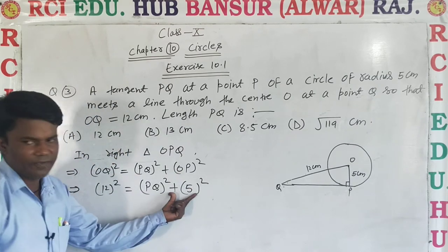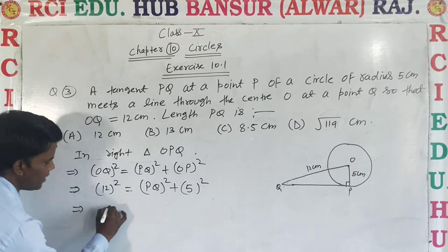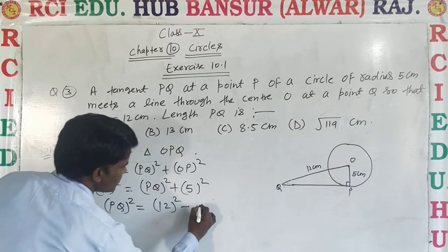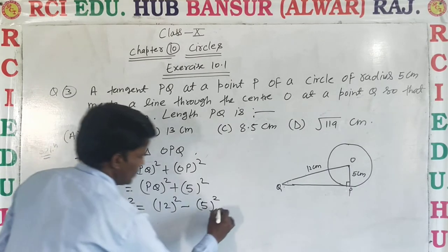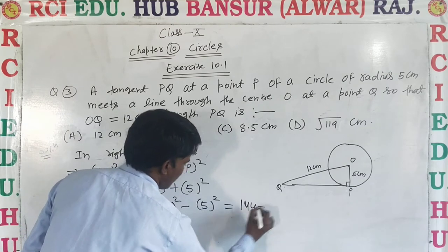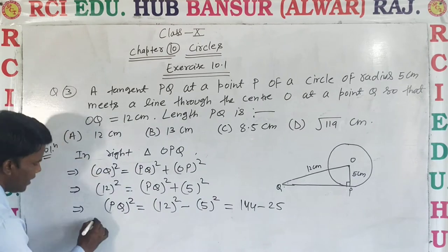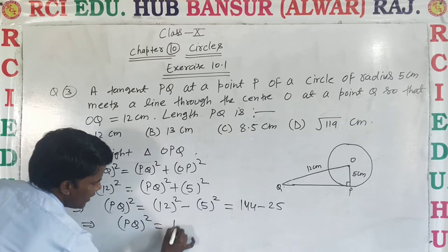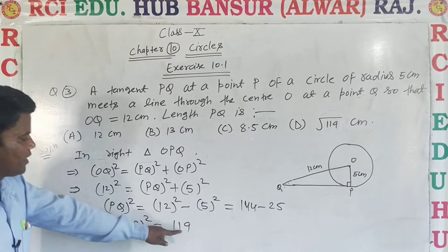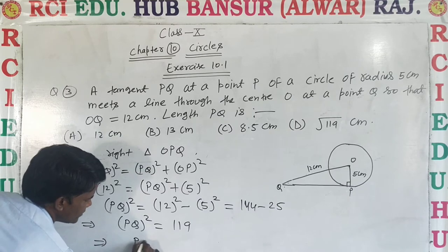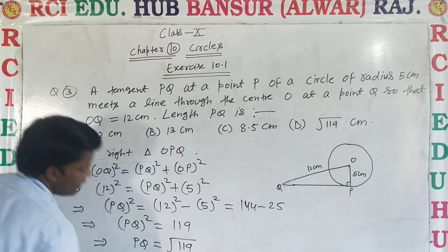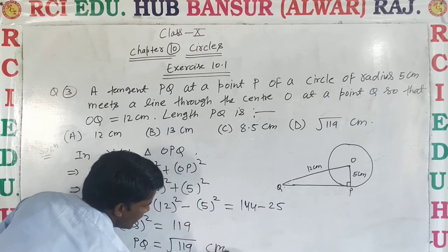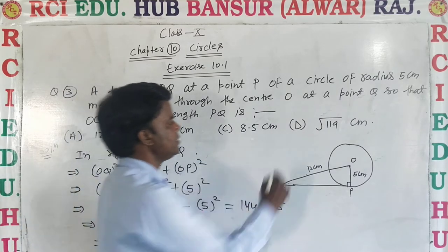Transferring 5² to the other side gives minus. So PQ² = 12² − 5² = 144 − 25 = 119. Taking the square root, the length of PQ is √119 cm. The correct answer is option D.